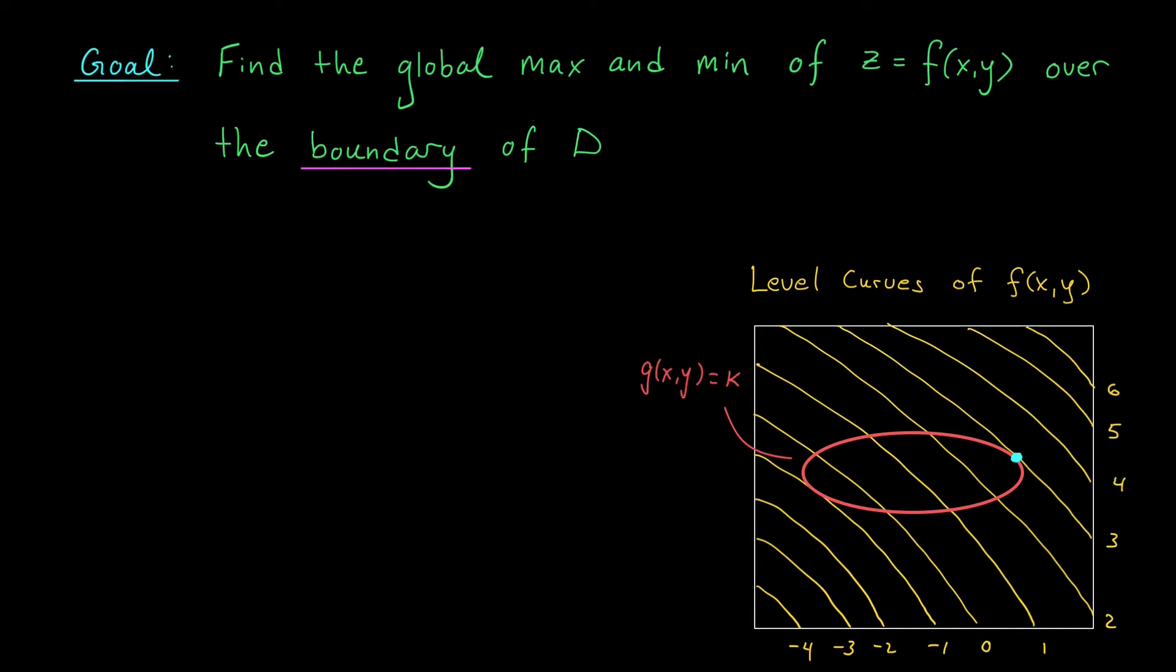So it satisfies the constraint, and our function value is as small as possible. Any lower, and we move off of that constraint curve. So this is our global min. Now, folks, if you understood this discussion, then I think you understand the main idea behind the method of Lagrange multipliers.